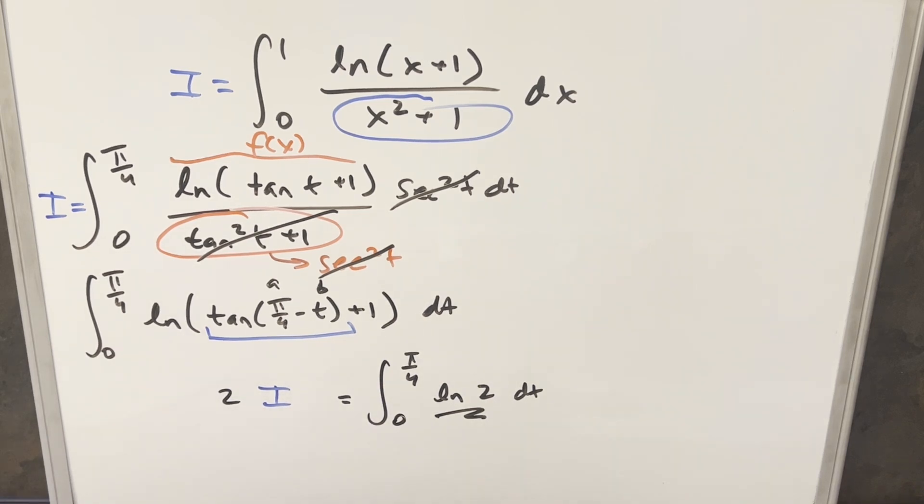This being a constant, we can just go ahead and integrate. This is just going to become natural log of two times x evaluated from zero to pi over four. The zero is going to be nothing. We plug pi over four in here, we're going to have natural log of two times pi over four.